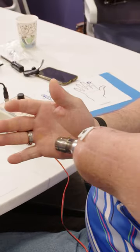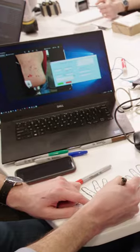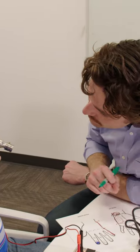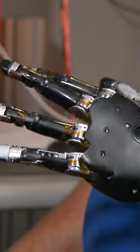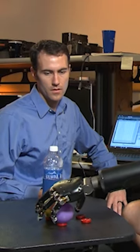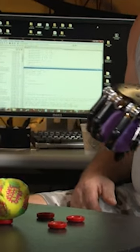We found that by being able to provide sensations back to the phantom hand, you're able to improve things like making it easier to control a prosthetic hand or being able to navigate your environment and pick up objects—that becomes easier when you can feel what's coming back to your missing hand.